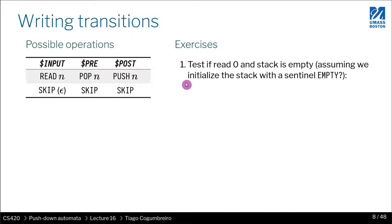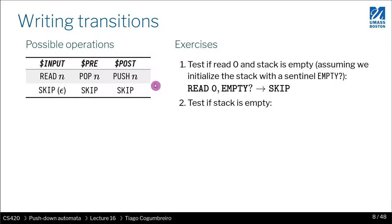In the first exercise, what we want to do is test if we can read input 0 and if the stack is empty, then advance. This assumes we are not doing anything else on the stack and that we're consuming the stack-empty sentinel — which also assumes the stack was initialized with that sentinel. So how would you write that? Please hit pause. The answer is: you would read 0, consume empty from the top of the stack, and then skip the push — meaning you're not pushing anything else, so now your stack is completely empty and you've consumed 0.